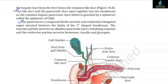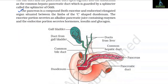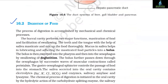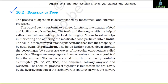The pancreas is a compound, both exocrine and endocrine, elongated organ situated between the limbs of the C-shaped duodenum. The exocrine portion secretes an alkaline pancreatic juice containing enzymes, and the endocrine portion secretes hormones, insulin and glucagon. 16.2 Digestion of Food. The process of digestion is accomplished by mechanical and chemical processes.